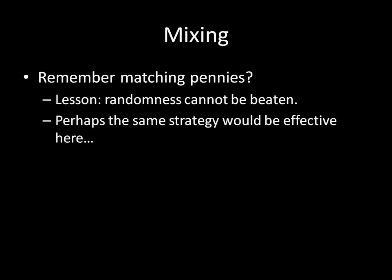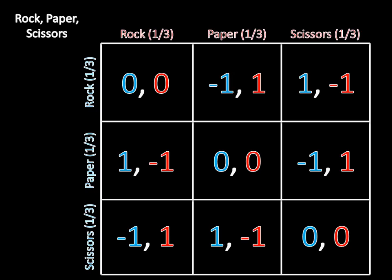So you put probability one-third on rock, probability one-third on paper, and probability one-third on scissors — just like I have here. Is this a mixed strategy Nash equilibrium? The answer is yes. It's easy to check because all we have to do is calculate each player's expected utility for each of their pure strategies, and we'll see that expected utility is equal in all cases.